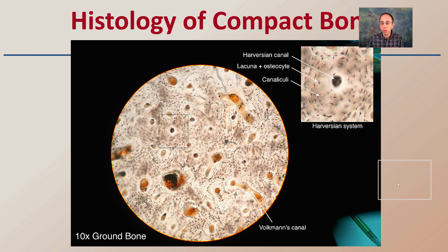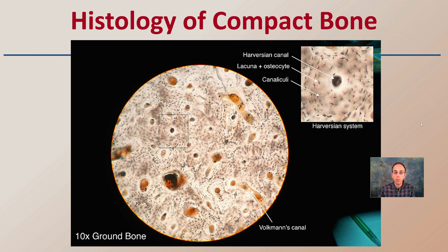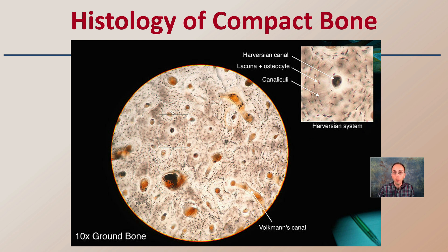Looking at the histology — the microscopic view of compact bone — at 10x of ground bone, we can see what it looks like and what we're focusing on. The Haversian canal is what we're going to be looking at here. Looking at the Haversian system, we can really focus in on that, and this is the area within a field of view that we're going to examine.